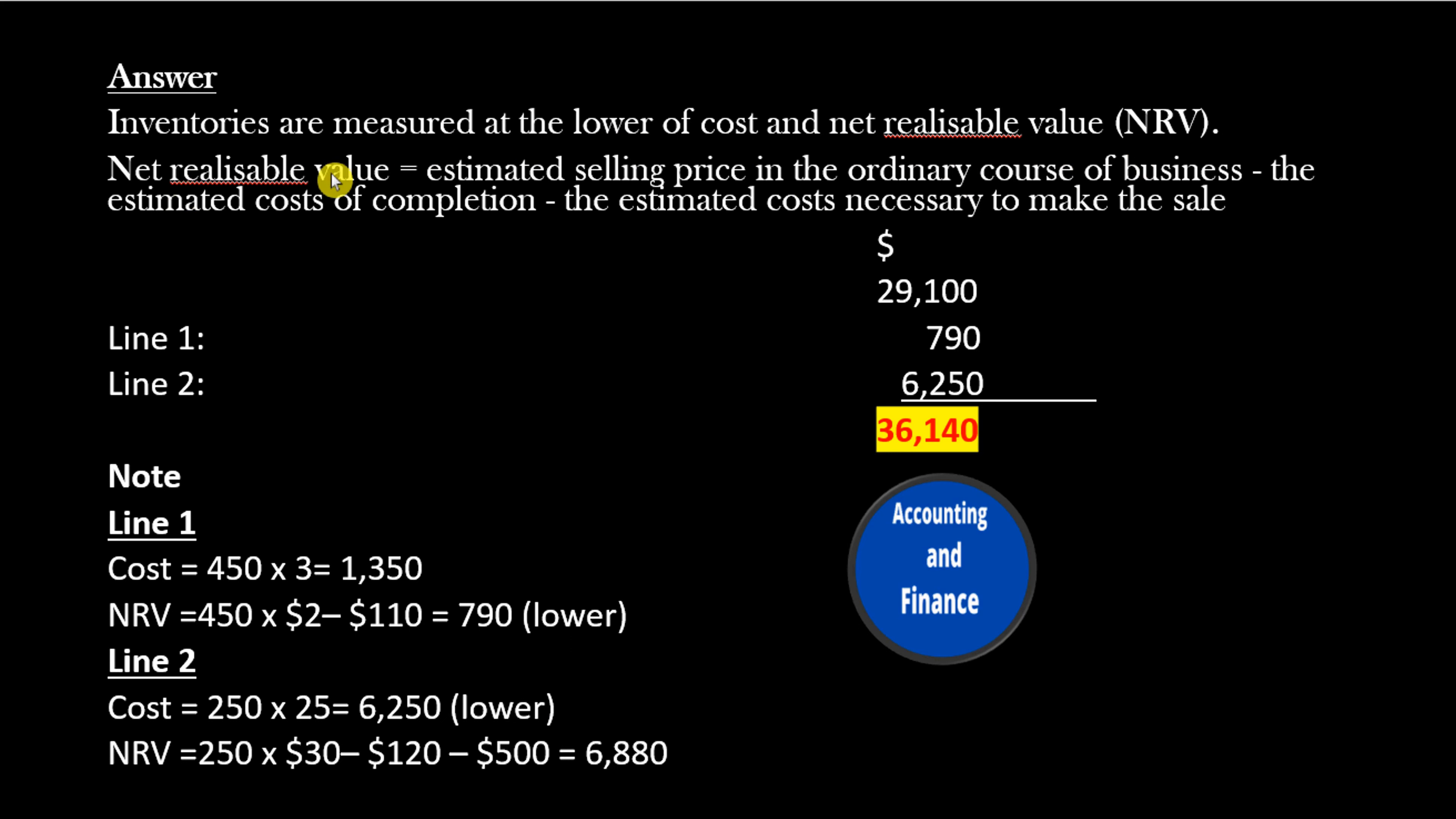Net Realizable Value equals the estimated selling price in the ordinary course of business, minus the estimated costs of completion, minus the estimated costs necessary to make the sale. $29,100, Line 1: